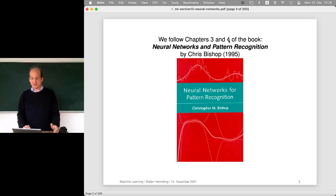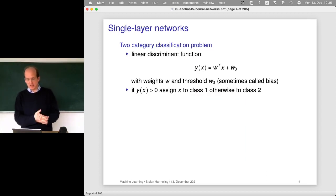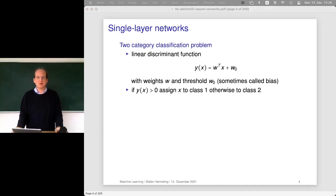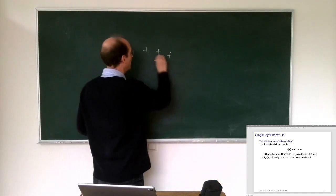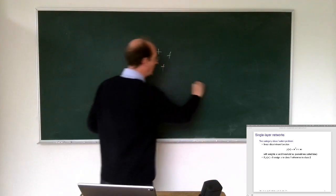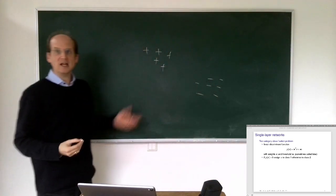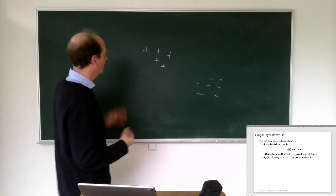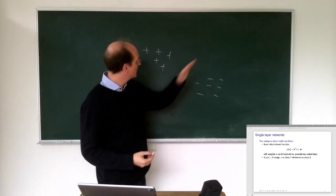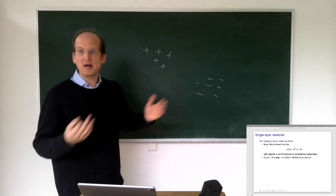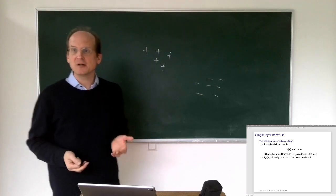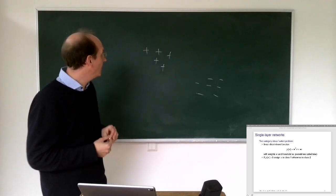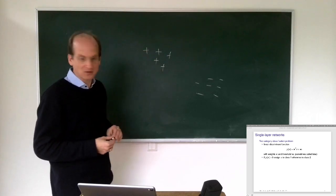So what problem are we looking at? We're looking at the two-category classification problem. We have positive examples and some negative examples and we want to learn a classifier for this. We learned the large margin classifier, which draws a straight line with maximum margin. But before support vector machines, there were already other methods - linear regression or logistic regression - which are prominent examples that can also solve these kinds of problems.